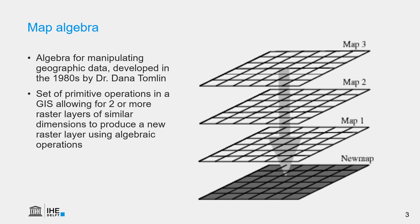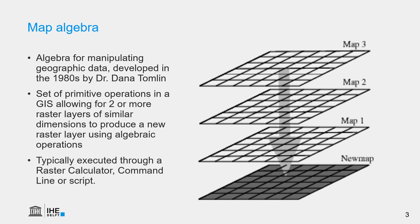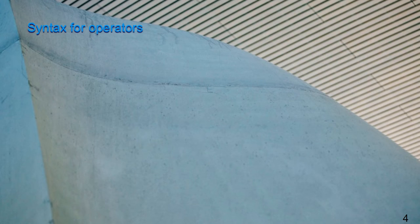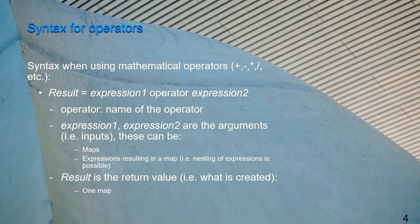But we can also use it for functions. In a desktop GIS, you will find this functionality in a raster calculator, but this can also be used in a command line or a script. Map algebra uses specific syntax. When we use mathematical operators, we write that the result equals an expression, and then the operator — plus, minus, multiplication, etc. — and another expression. These expressions can be maps or something that results in a map, and the result is normally a map.